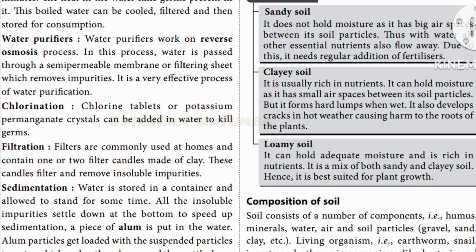Loamy soil can hold an adequate amount of moisture and nutrition. It is a mixture of both sandy and clay soil, so it is best for plant growth. In clay soil there is less air but more moisture; in sandy soil there is more air but less water. Loamy soil balances both, making it best for growing plants.